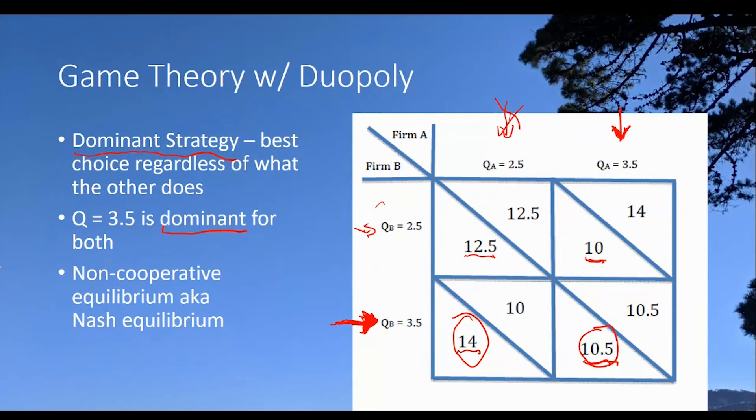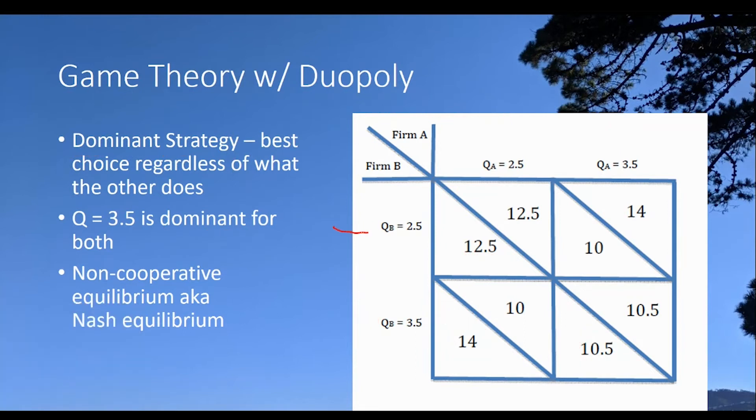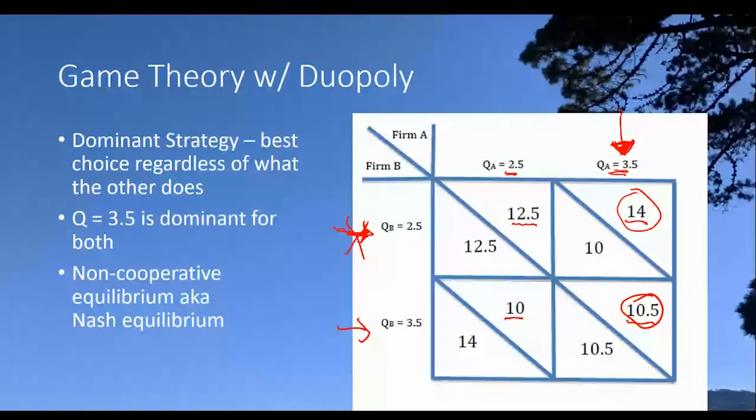Now, if we reverse this, and if we said, let's suppose that we do it for firm A instead, in that case, let's suppose firm B chooses 2.5. What will firm A do best? Firm A's outputs are here, and they're going to compare 12.5 to 14. But that's the best choice for firm A. 14 is better than 12.5. So if firm B chooses 2.5, firm A is going to choose this column right here. But what if firm B doesn't do that? What if firm B chooses 3.5? Well, now firm A is going to choose between 10 and 10.5. Again, 10.5 is better. Again, this is the best strategy for firm A. Always choose 3.5 output regardless of what firm B does.